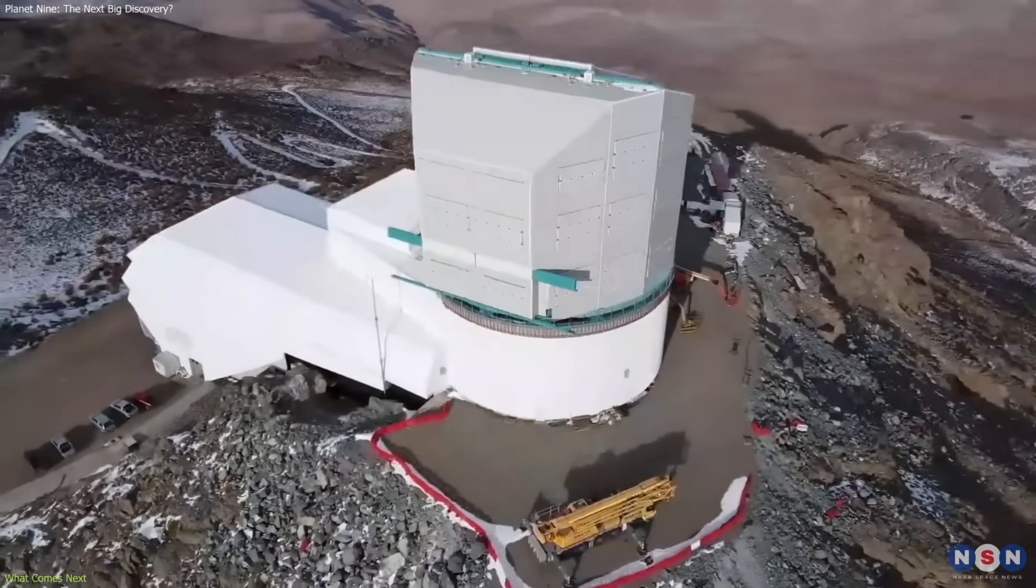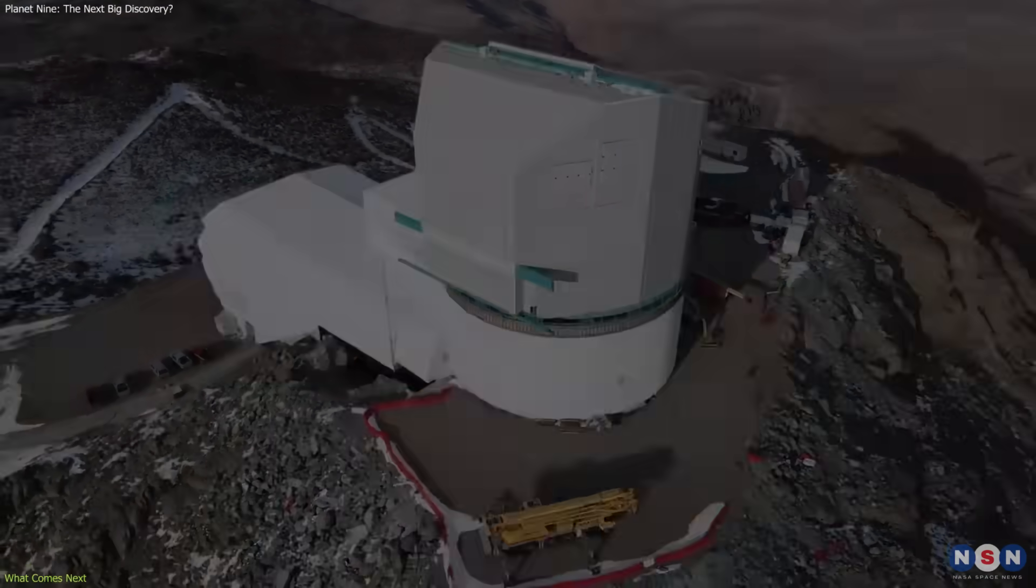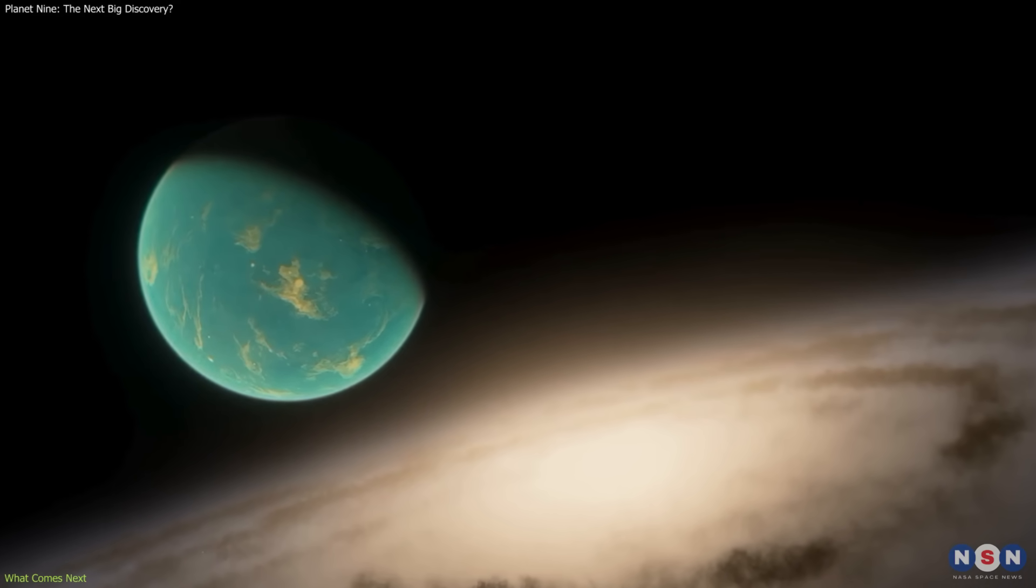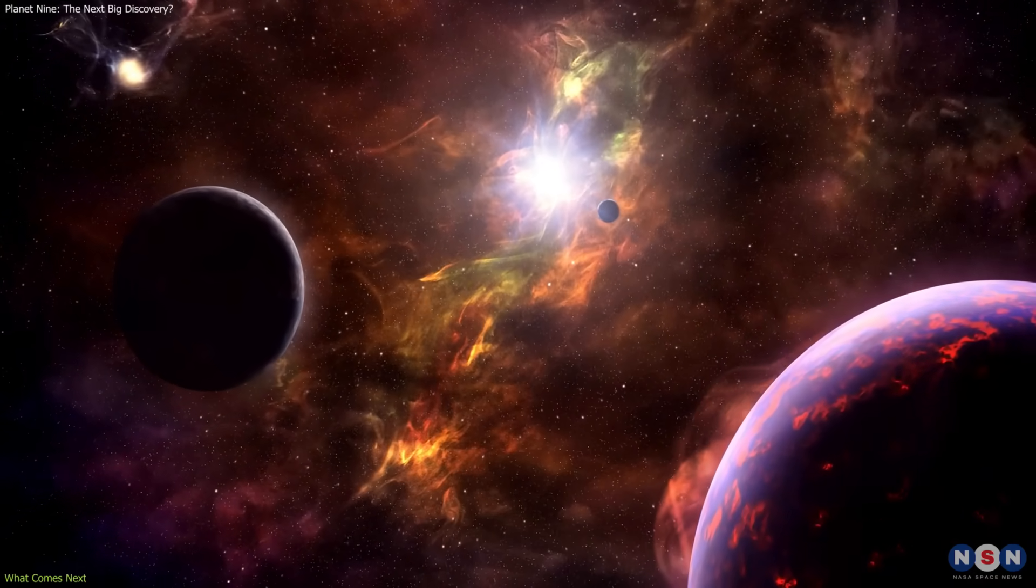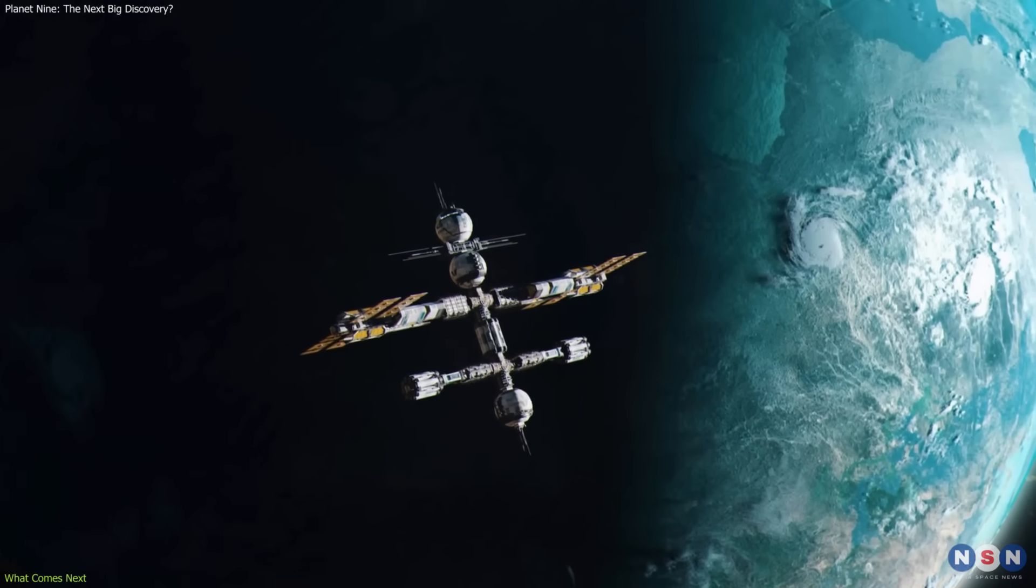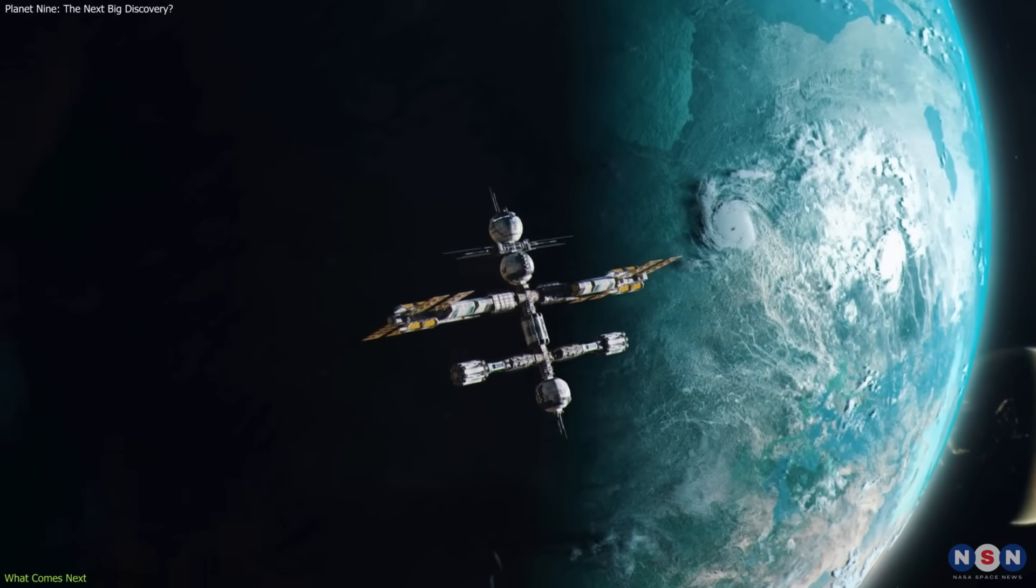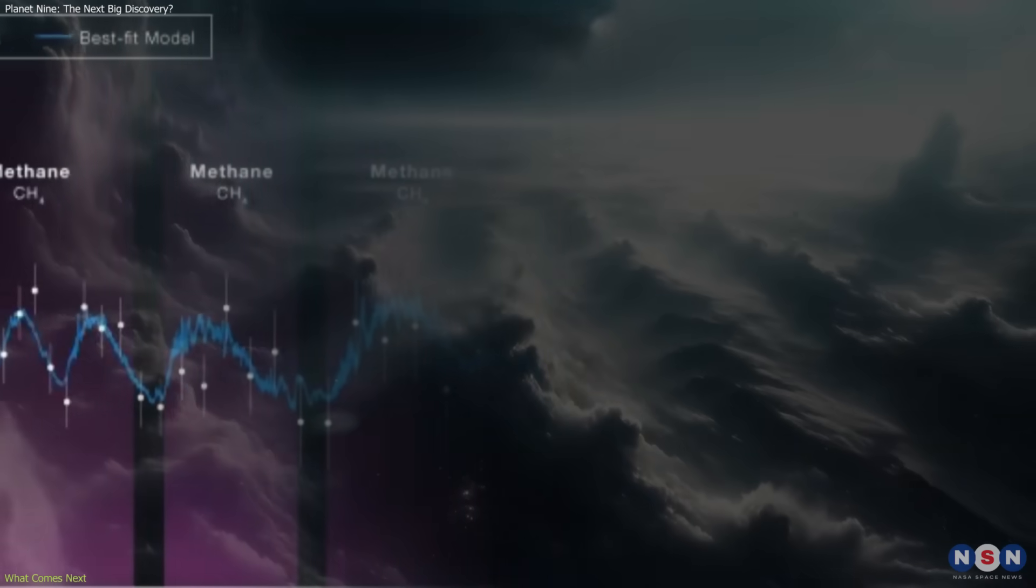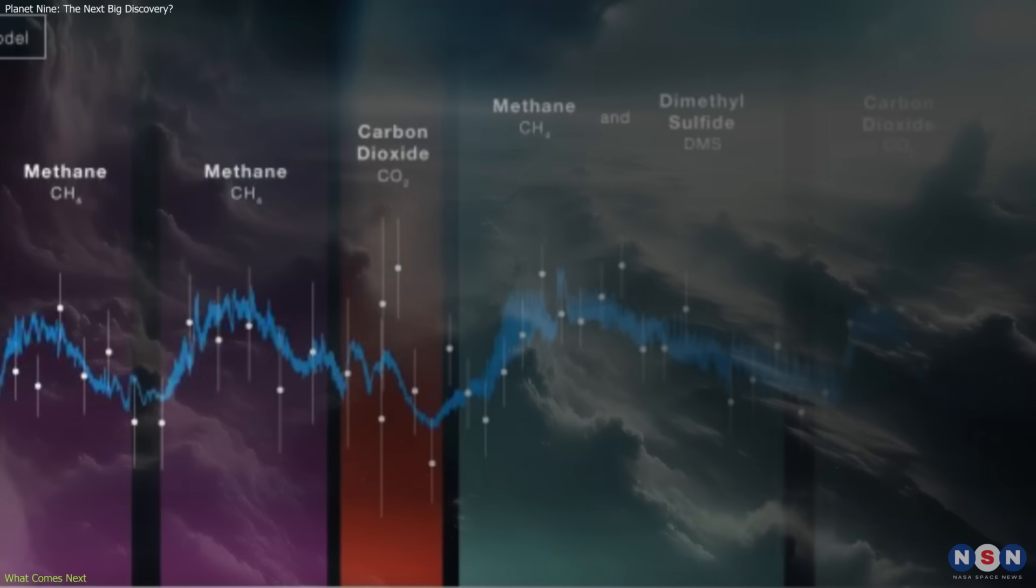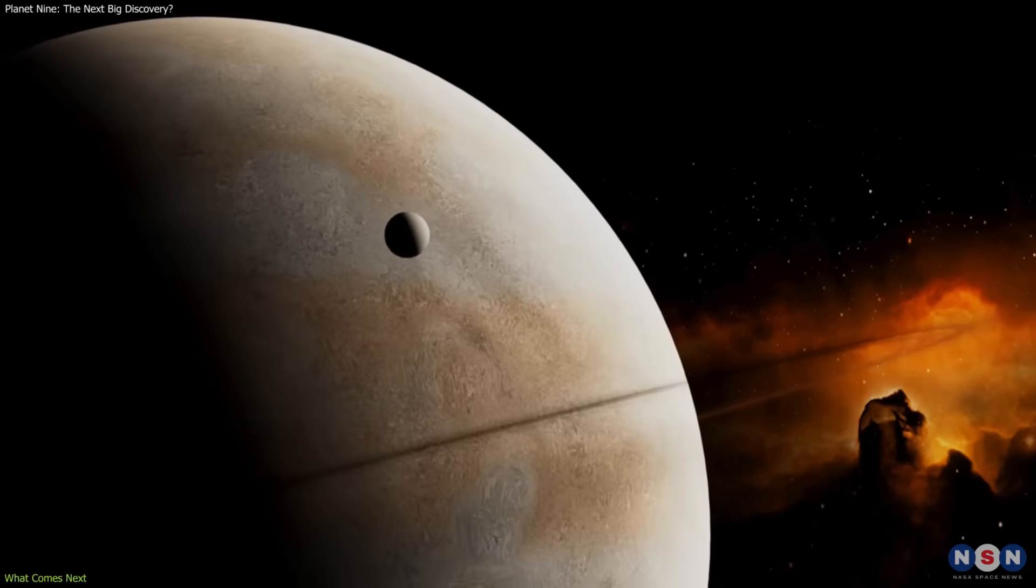If Rubin succeeds, the discovery would be historic. A new super-Earth in our solar system would confirm that we are not so different from other planetary systems and would provide a unique laboratory for studying such worlds up close. It would also validate years of simulations and offer astronomers a chance to investigate its composition, atmosphere, and potential moons.